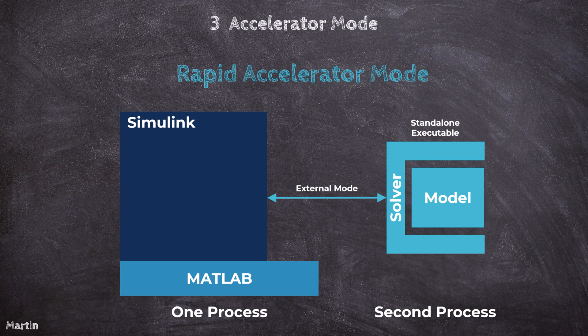Rapid Accelerator Mode generates a stand-alone executable from your Simulink model, which includes the solver and model methods. This executable runs independently of the Simulink environment and communicates with Simulink using external mode, allowing for faster simulation performance. If a second processing core is available, the stand-alone executable runs on that core, while MATLAB and Simulink continue to run in the primary process. By offloading computations to the stand-alone executable, Rapid Accelerator Mode can achieve substantially faster simulation speeds, particularly for large and complex models. Multi-core processing ensures better use of available system resources.